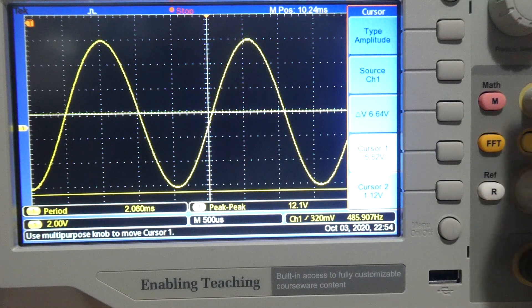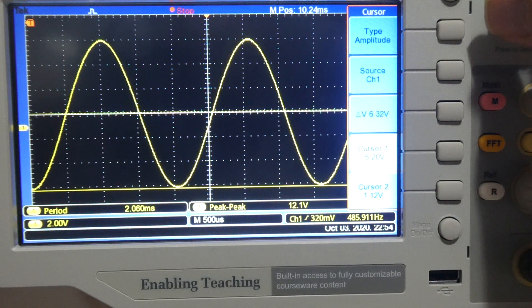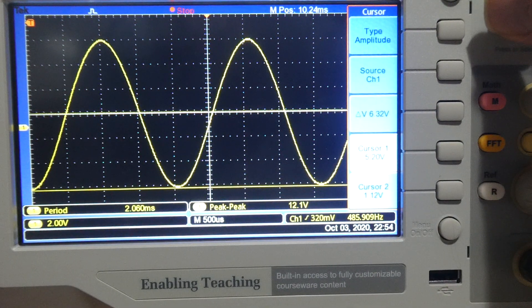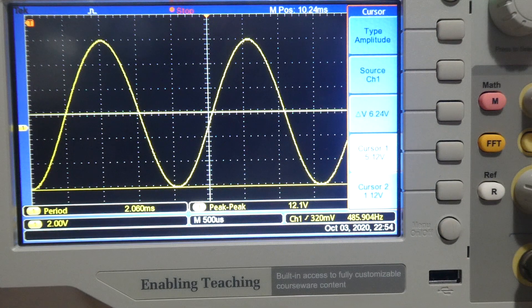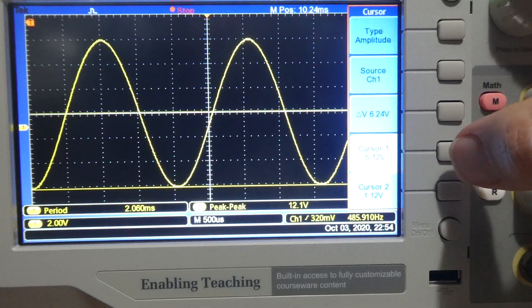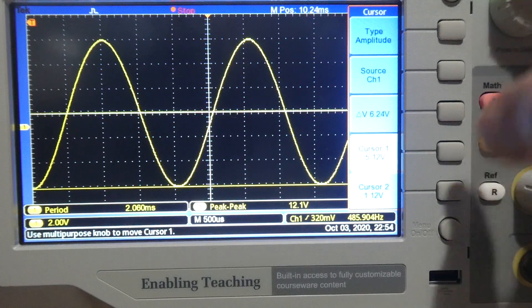And now I can move my cursors starting at the bottom. Minus 5.12 volts. I'll accept that.